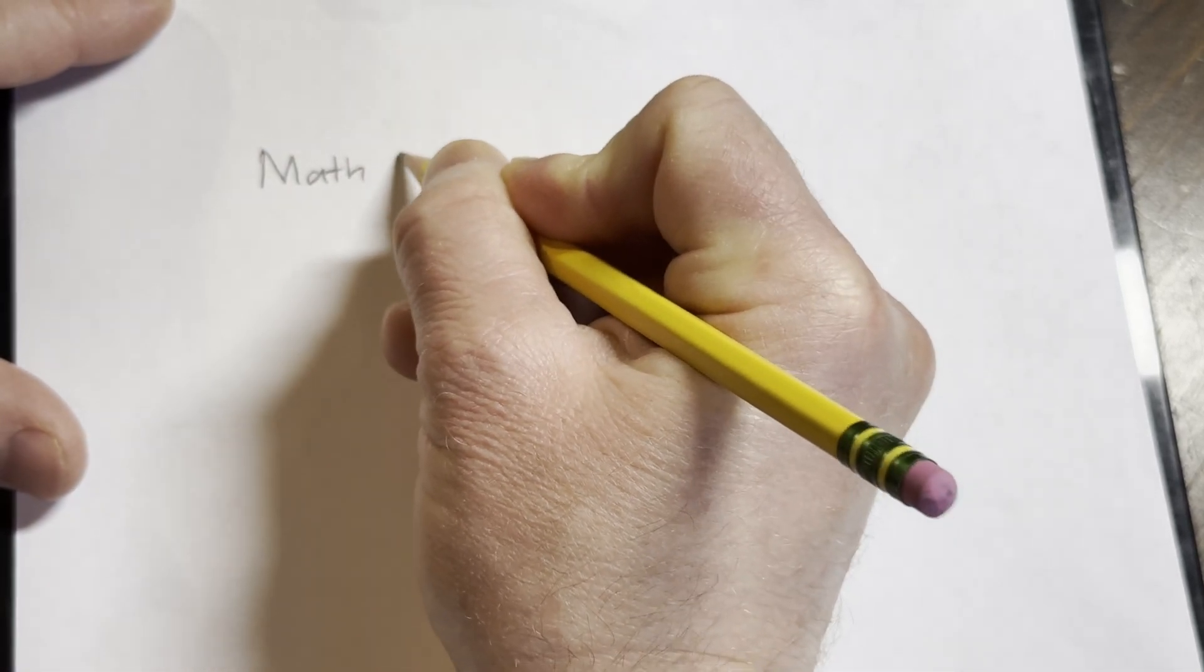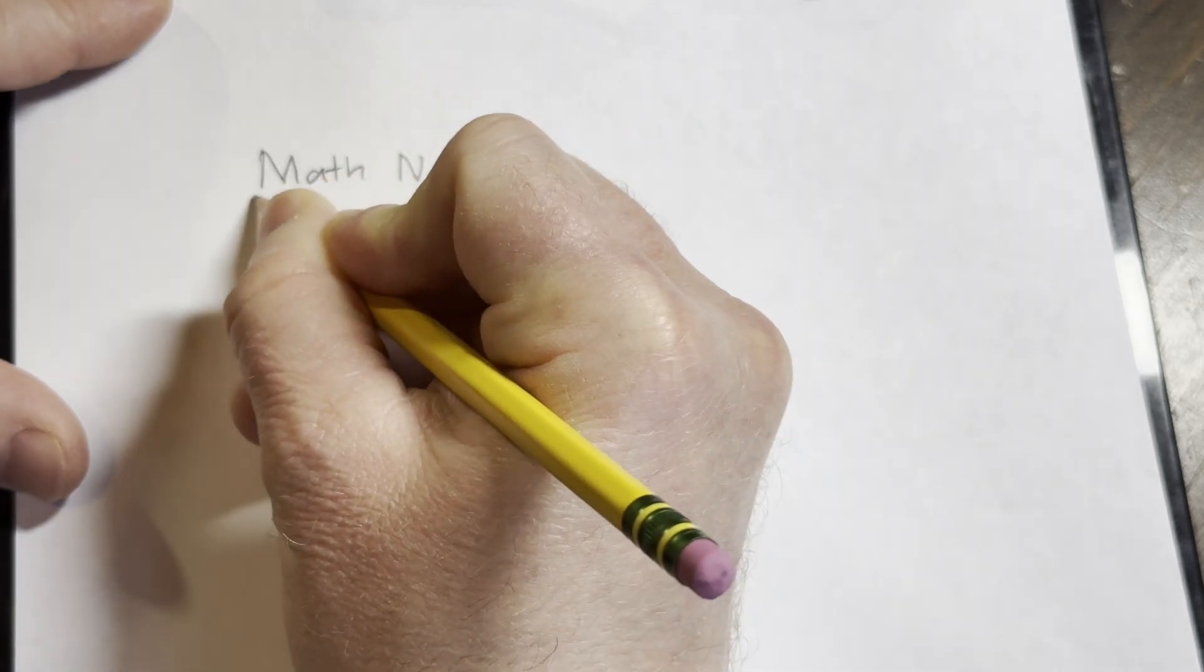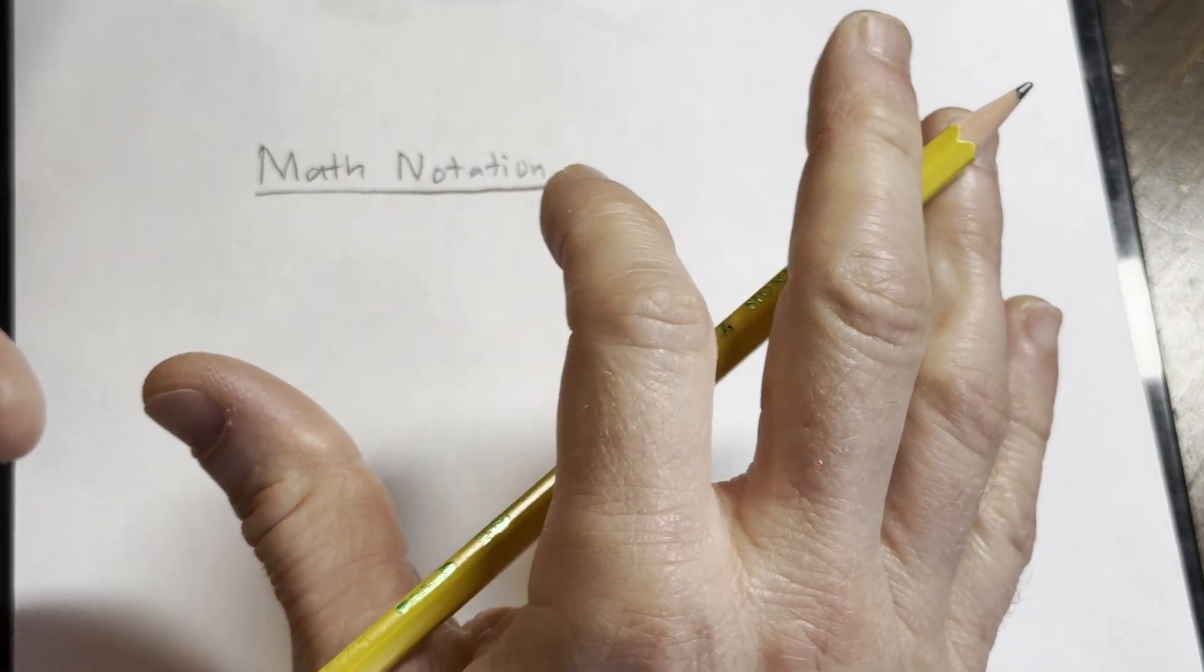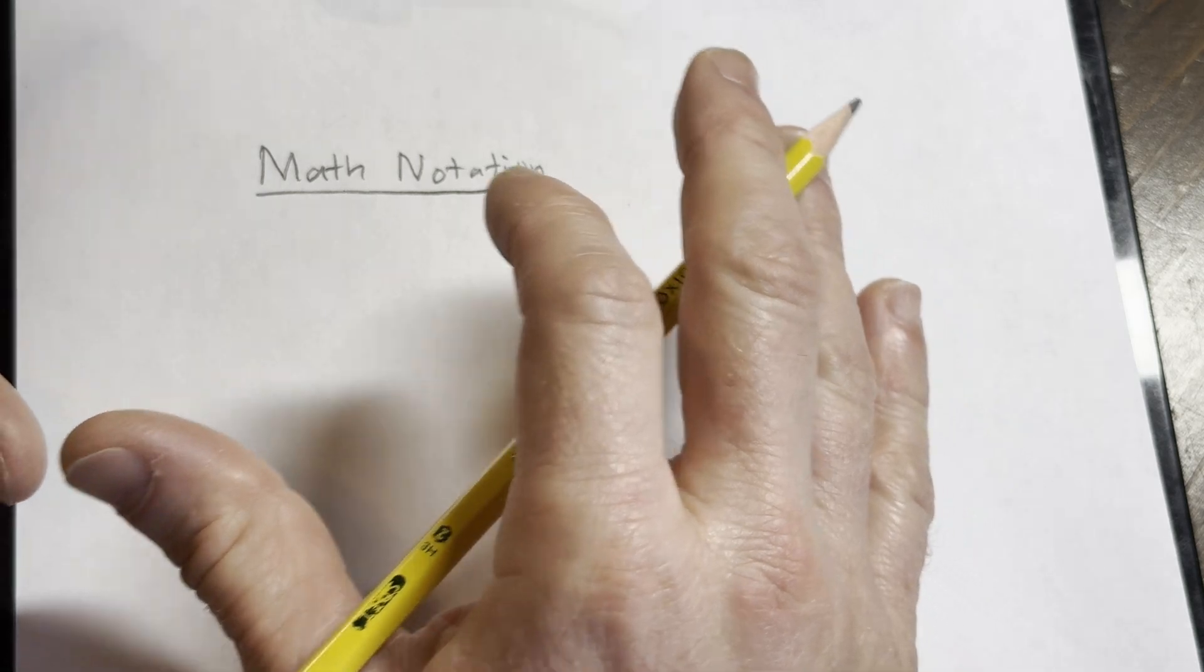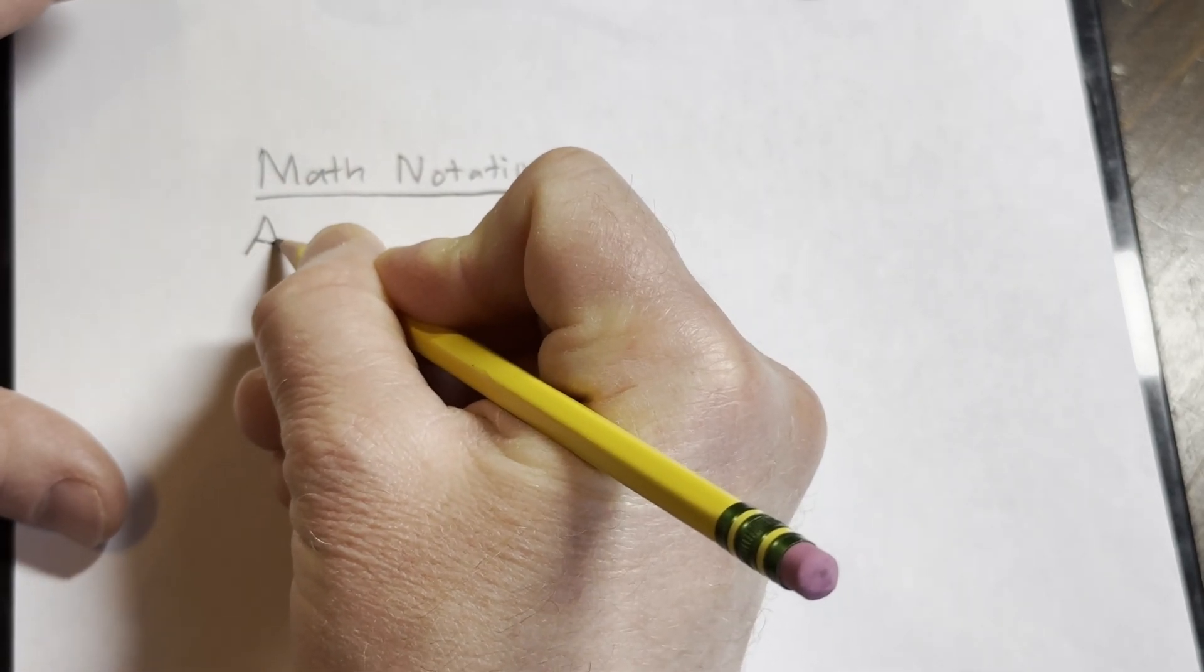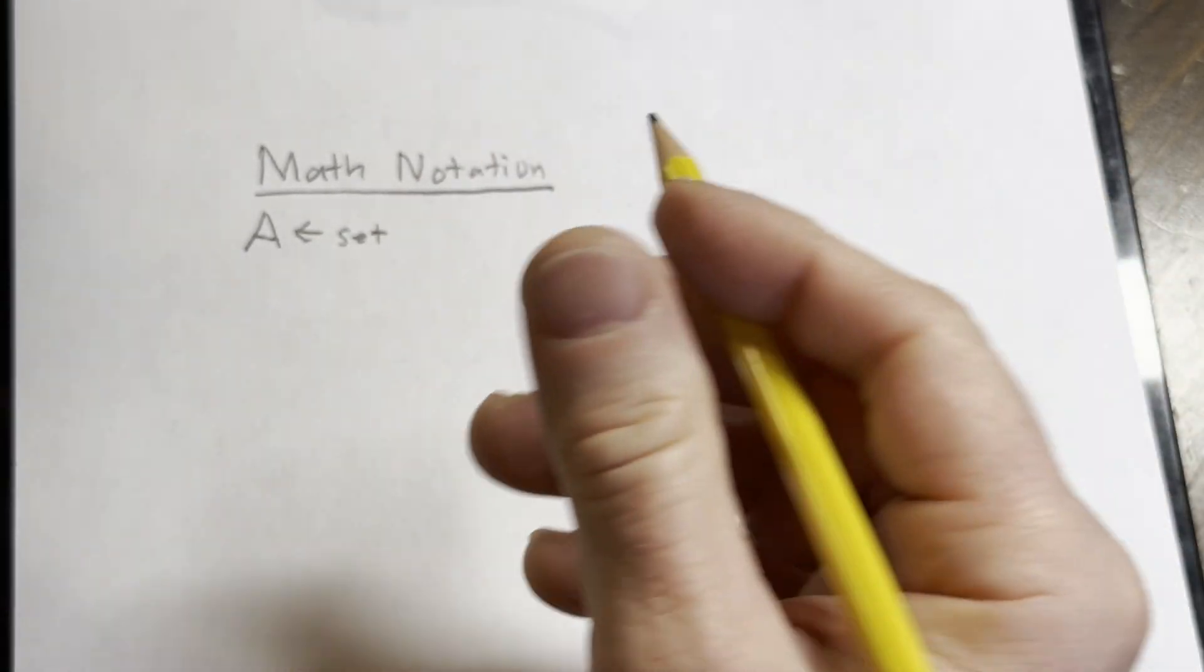So math notation. By a set we mean a collection of objects. So if A is a set, it's a collection of objects.